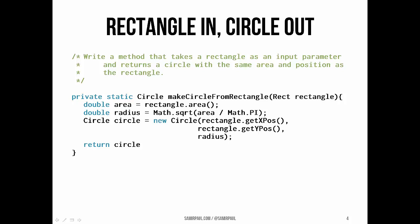As a first example, let's write a method that takes a rectangle as an input parameter and returns a circle with the same area and same position as the rectangle. This method won't make any changes to the rectangle, and it must instantiate the circle. Its return type is circle and it takes a single parameter called rectangle. We get the area of the rectangle, store it as a double called area, back-calculate the radius, create a new circle with the same position and that new radius, and return a reference to that new circle object.